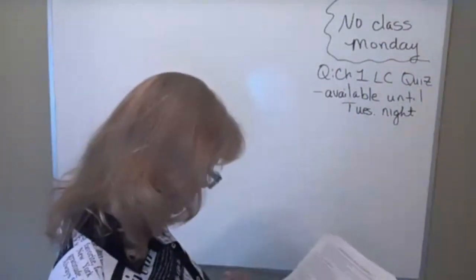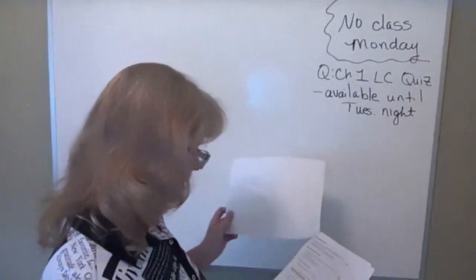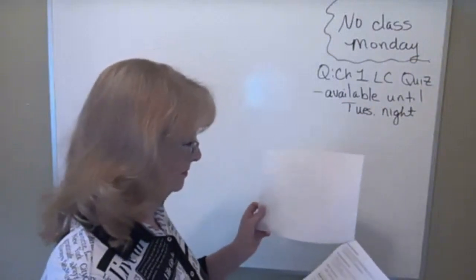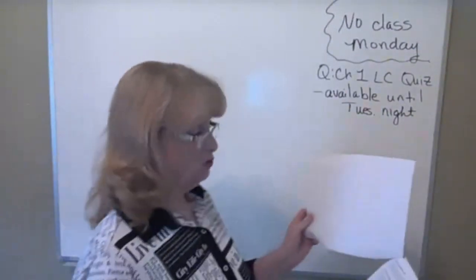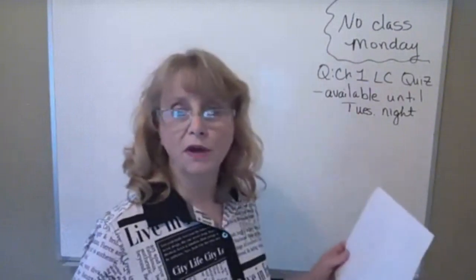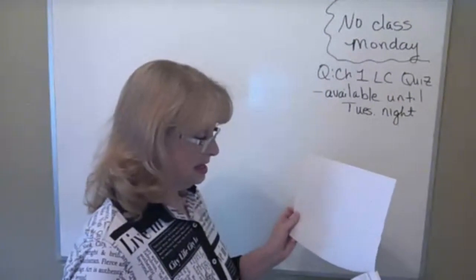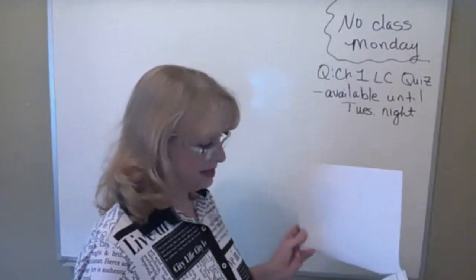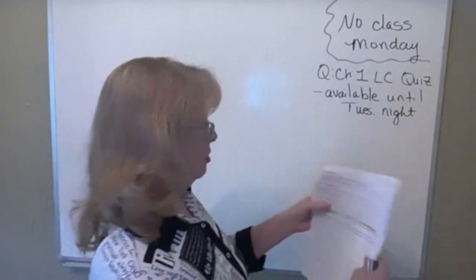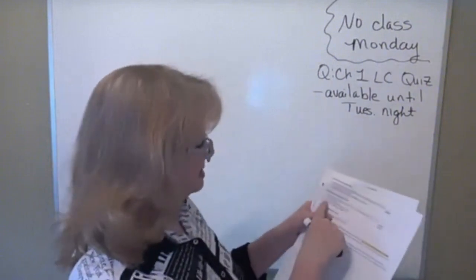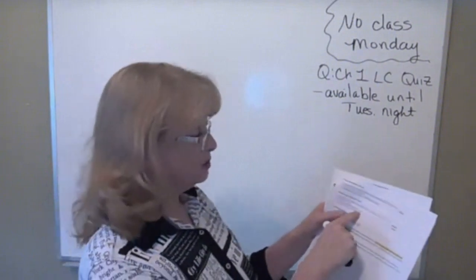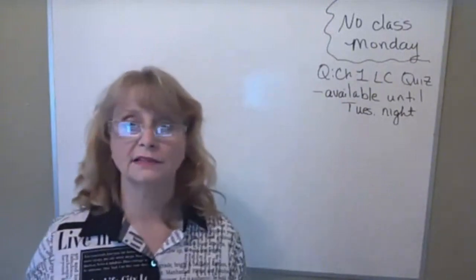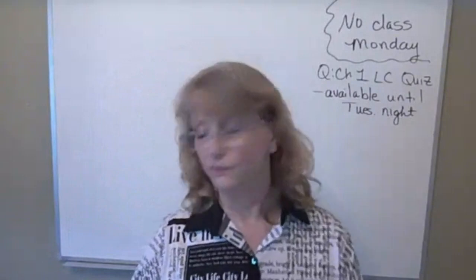The next Learning Catalytics quiz is on Wednesday, September 16th. I'll probably put it on before that date, and I'll make it due that day before class because I want to go over it as part of our review. If you have your checklist planner out, on Wednesday September 16th where it says 'Chapter 2 Learning Catalytics quiz,' put that it's going to be due that day before class. I will send an email out about that as well.